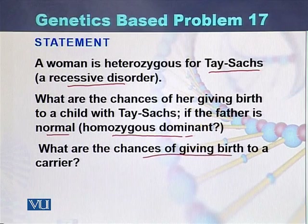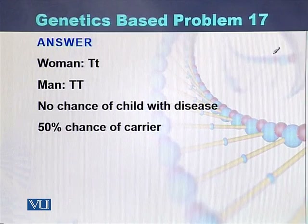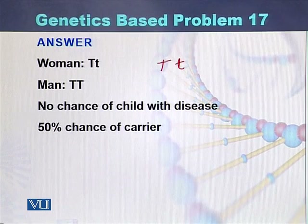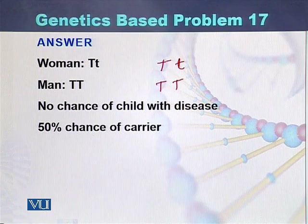So the woman is a carrier. She is heterozygous because the disease is recessive and she is normal — she has one dominant allele and one recessive allele. The male is normal so he has both dominant alleles. There will be no chance of a child with the disease, but there would be a 50% chance of carriers.